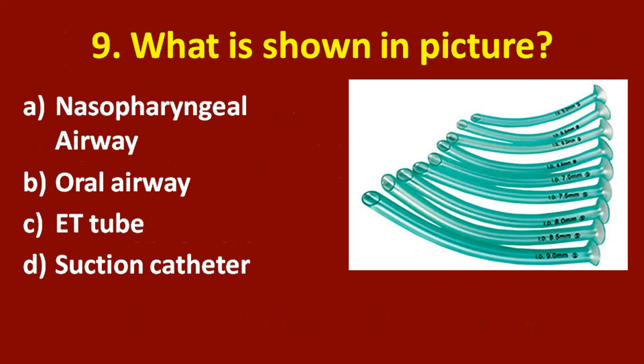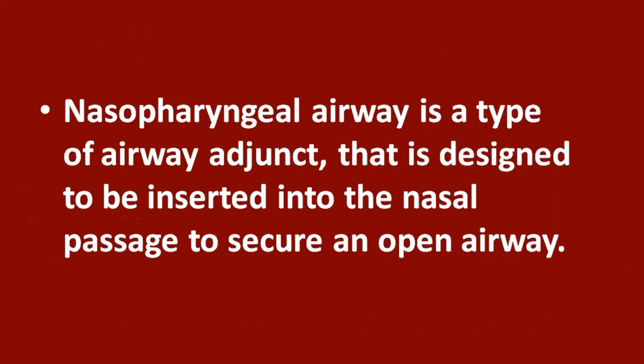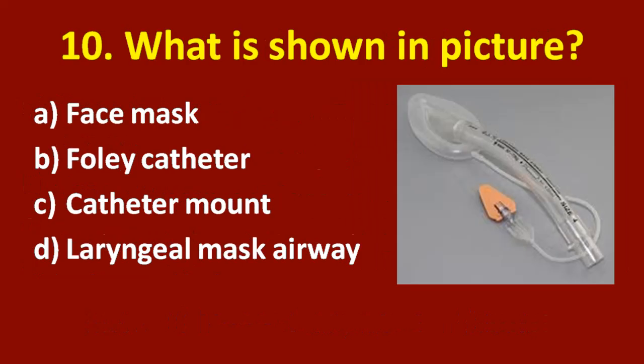Ninth question: what is shown in the picture? Option A: nasopharyngeal airway. Option B: oral airway. Option C: ET tube. Option D: suction catheter. The correct answer is option A, nasopharyngeal airway. A nasopharyngeal airway is a type of airway adjunct designed to be inserted into the nasal passage to secure an open airway.